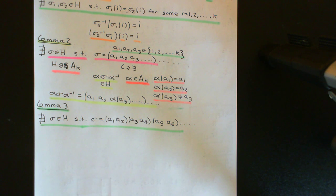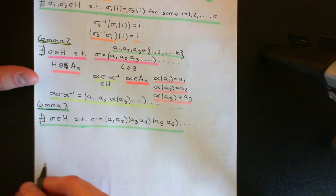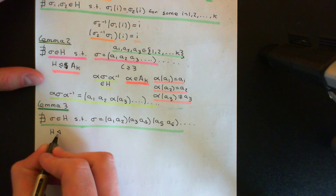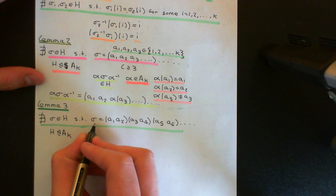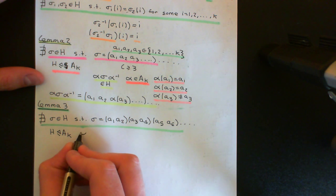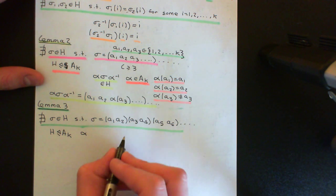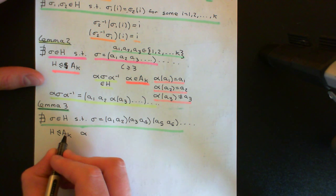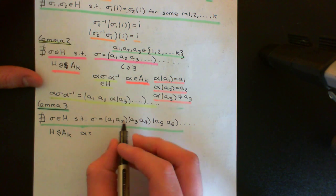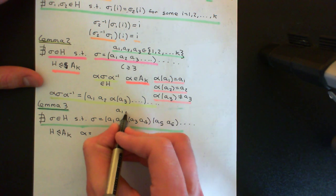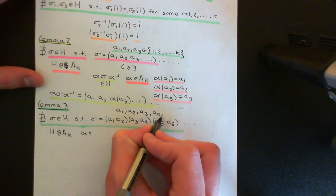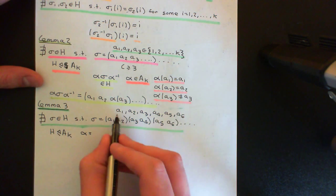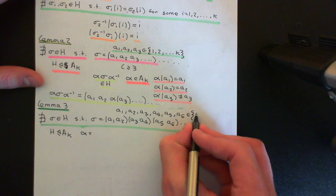Why can we not have elements that consist solely of 2-cycles in H? Again, we're going to find some element in A_k to conjugate this by to make it break the corollary to Lemma 1. That's how we'll disprove that H can contain elements of this form. We're relying on the fact that H is a normal subgroup of A_k. If we conjugate by an element we must get something else in H. The elements a1, a2, a3, a4, etc. are all just elements of the set {1, 2, 3, ..., k} — just names for those elements, all distinct.